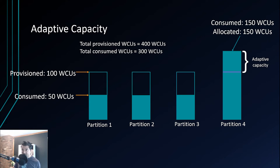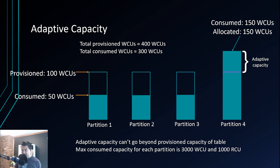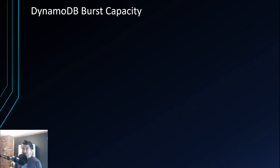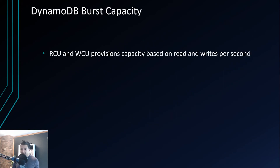This extra capacity beyond the initial provisioned WCU is called adaptive capacity, and it works for both reads and writes. However, there are limitations: adaptive capacity cannot exceed the total provisioned capacity of the table, and max consumed capacity per partition is 3,000 RCU and 1,000 WCU — adaptive capacity cannot go beyond those limits.